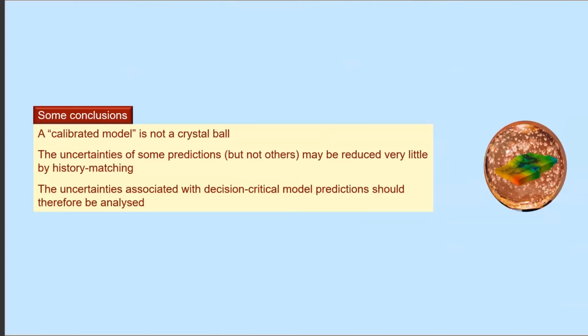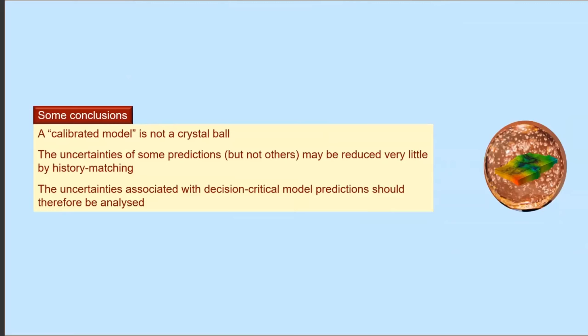There'll always be uncertainty, and our job is to quantify it and process data in a way that reduces it as much as the data will allow. The model is a data processing tool rather than a simulator — our simulation ability is quite poor, but our data processing ability is actually quite good.